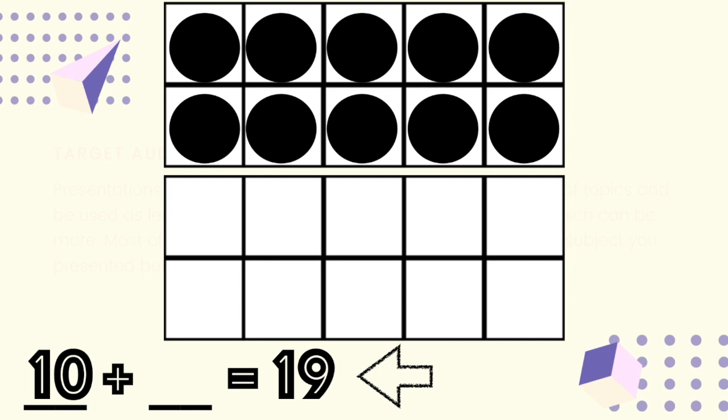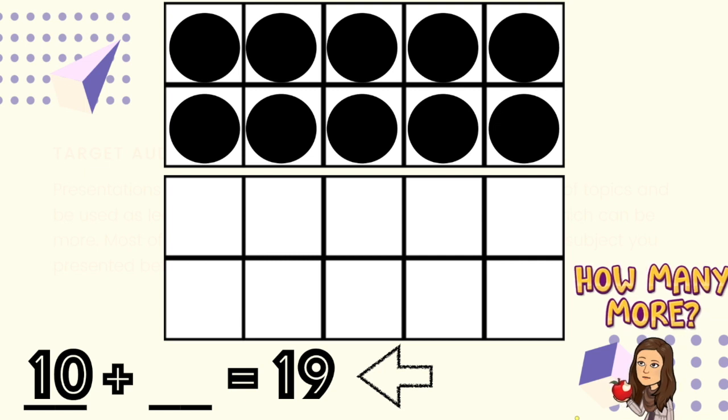You got it! 19 is greater than 10. Now, how do we figure out how many more will get us to 19? You got it! Start at 10 and count on, adding one counter at a time.